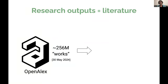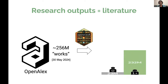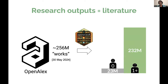OpenAlex now has over 250 million works as of yesterday. I used the OpenAlex R package in R. I found that 23 million records don't have any authors, but we still have quite a lot that have at least one author assigned.